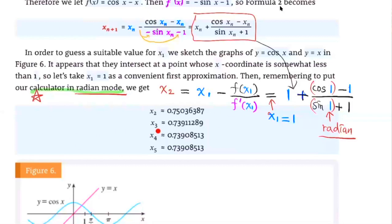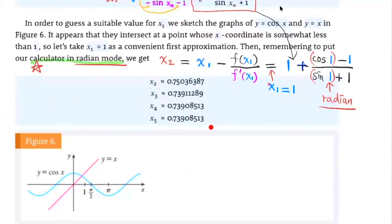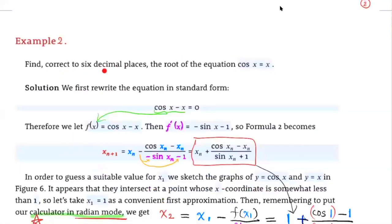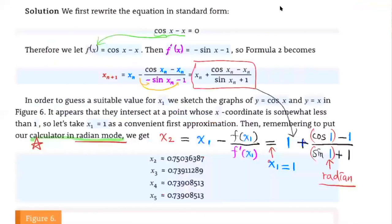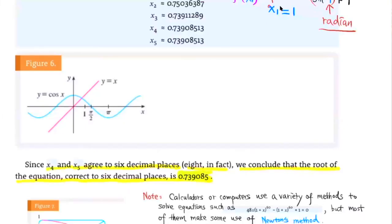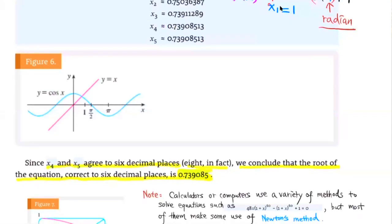Then we continue. We substitute x2 into xn to find x3, then x4, then x5. Notice that x4 and x5 agree to 8 decimal places. Since we're only required to be correct to 6 decimal places, and these two successive approximations agree to more than 6 decimal places, we can stop. So we conclude that the root of the equation correct to 6 decimal places is this number.